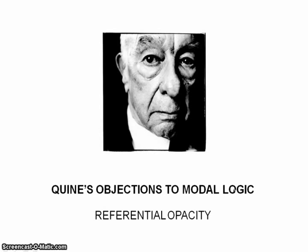In my last video on Quine's objections to modal logic, I explored how Quine prefers extensional logical systems and is uneasy about intentional ones. In this video, I want to examine a particular failure of extensionality that, according to Quine, spells trouble. Because this gets quite subtle, I want us to recall what the problem was last time.